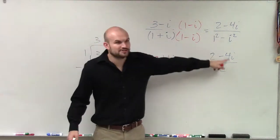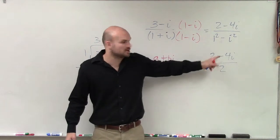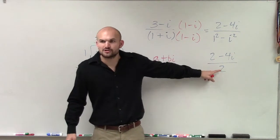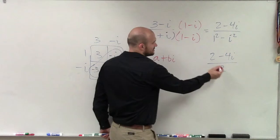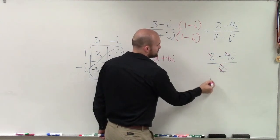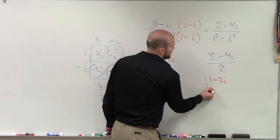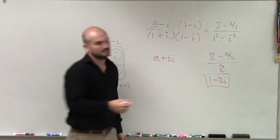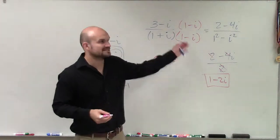Right. You can say, well, this is your real, that's your imaginary. But both of these numbers are being divided by two. So to write this in that form, let's just divide them through. So therefore, my final answer is one minus two i. Because that two divides into both terms.